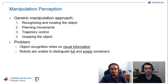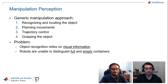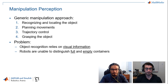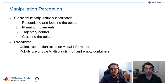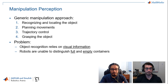Manipulation perception is an important capability in domestic service robots, and the generic manipulation approach is generally composed of four general steps. First, the robot recognizes and locates the object, plans movements for grasping it, may perform some low-level control — usually trajectory tracking control — and finally the robot grasps the object. So in most domestic service robots, these are the four general steps for manipulating something.